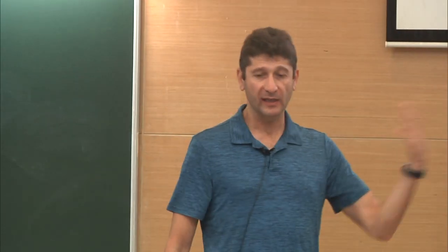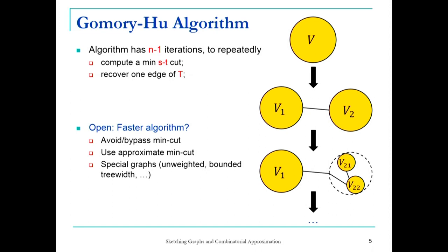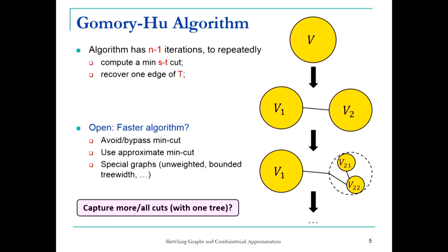Another thing we could try is to solve the problem only for a subset of inputs, like planar graphs. For planar graphs, there is actually a result. For unit weights, maybe it's easier — there are some results that do faster than the general case, but not linear time. So this is what I wanted to say about the Gomory-Hu algorithm. Let's try to move to other concepts.